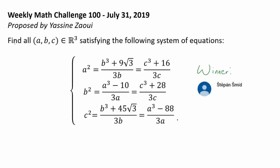So what is the 100th challenge? Well, we wish to find all ordered triples A, B, C such that A, B, and C are all real numbers satisfying the following system of equations. And we have a fairly symmetric system of equations given below. We have A squared, B squared, C squared in a row.